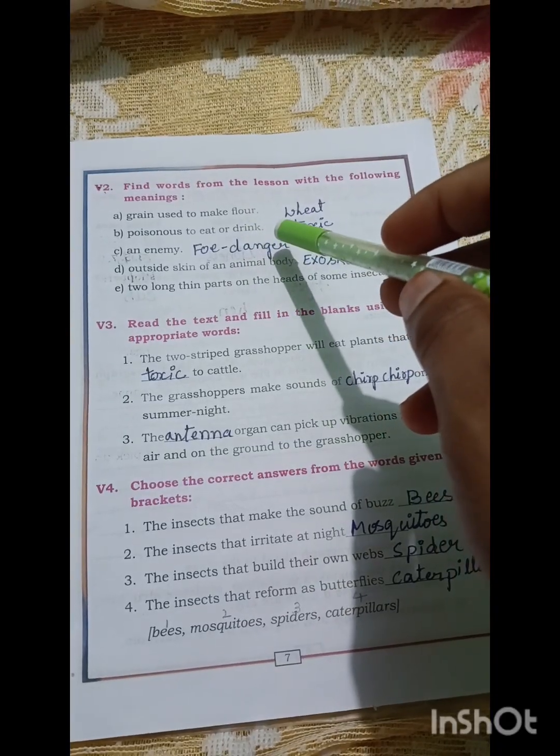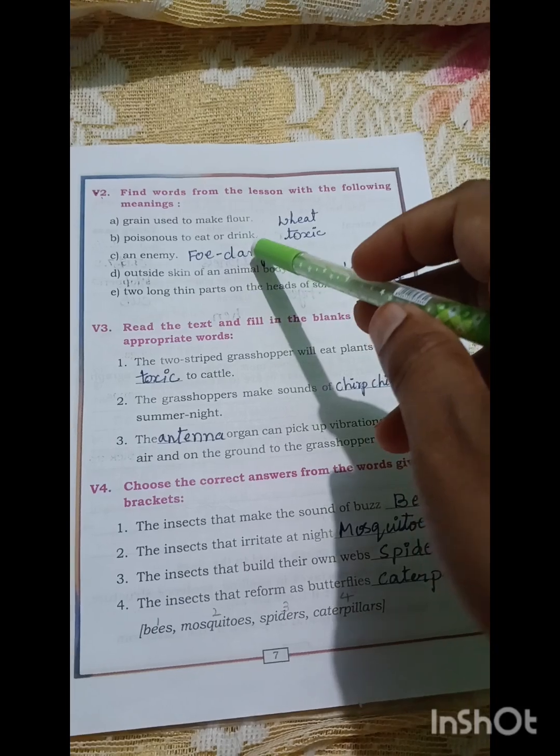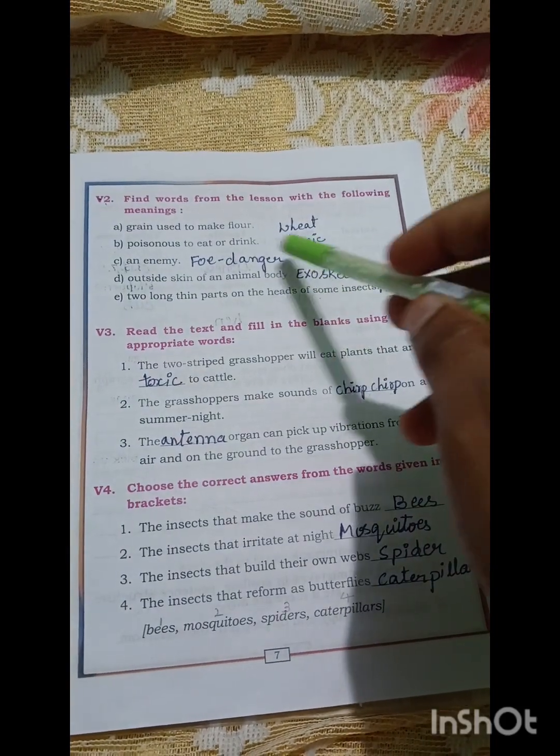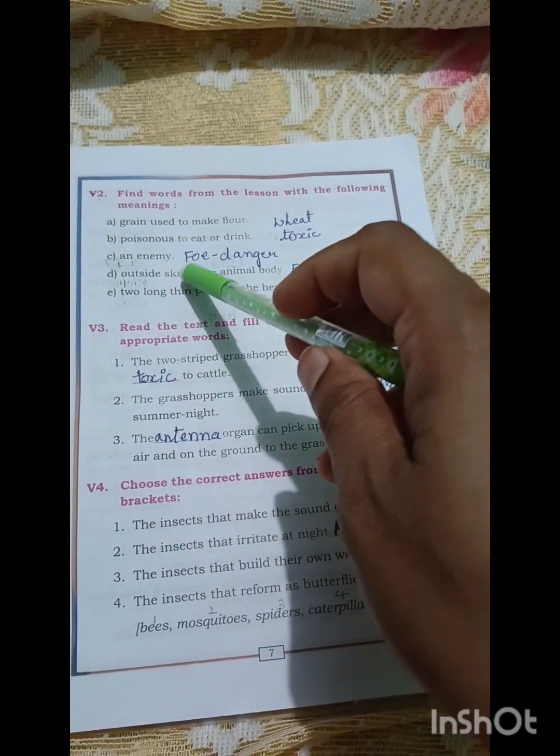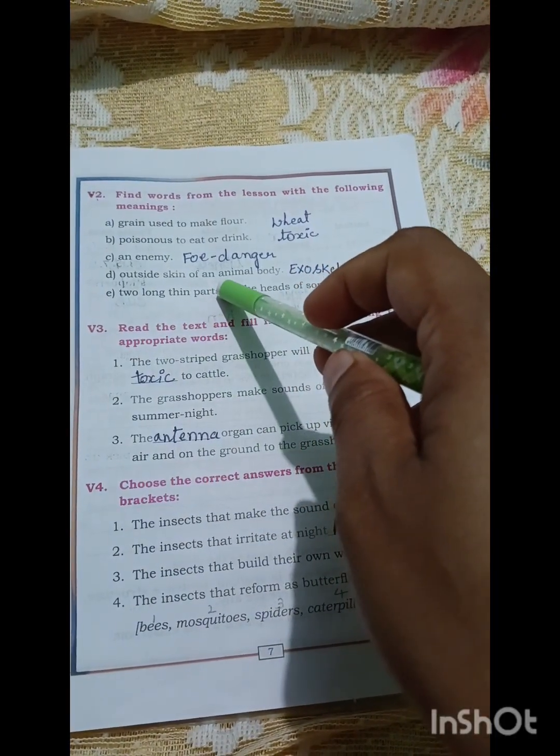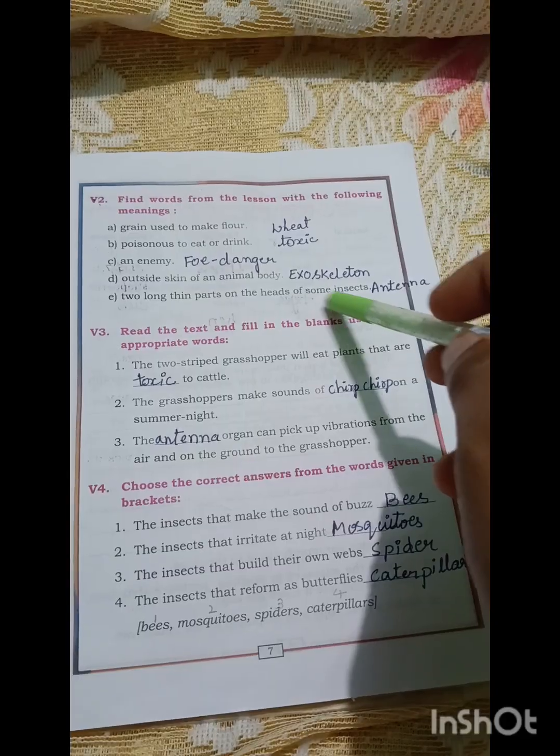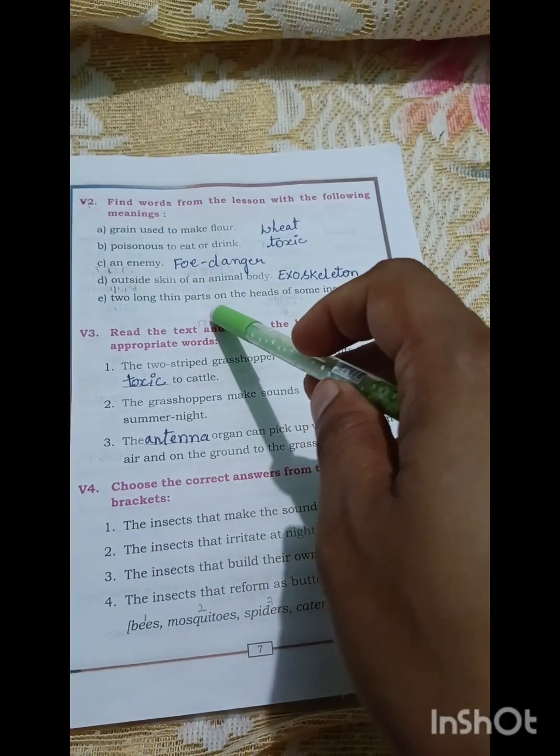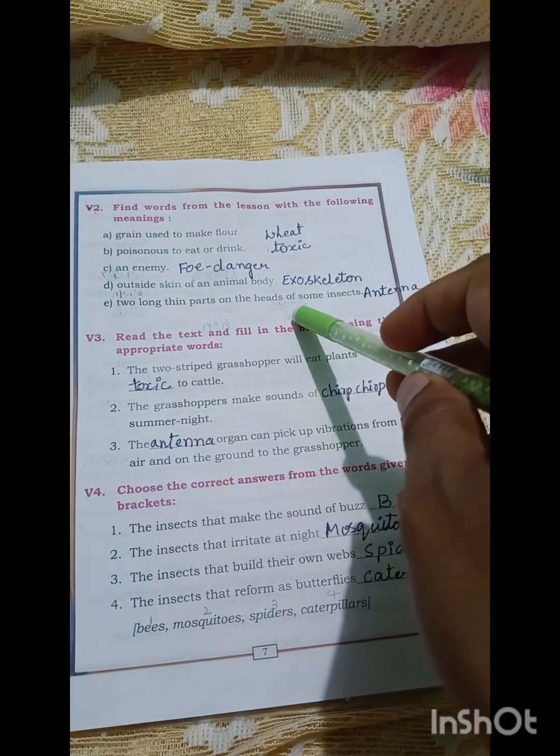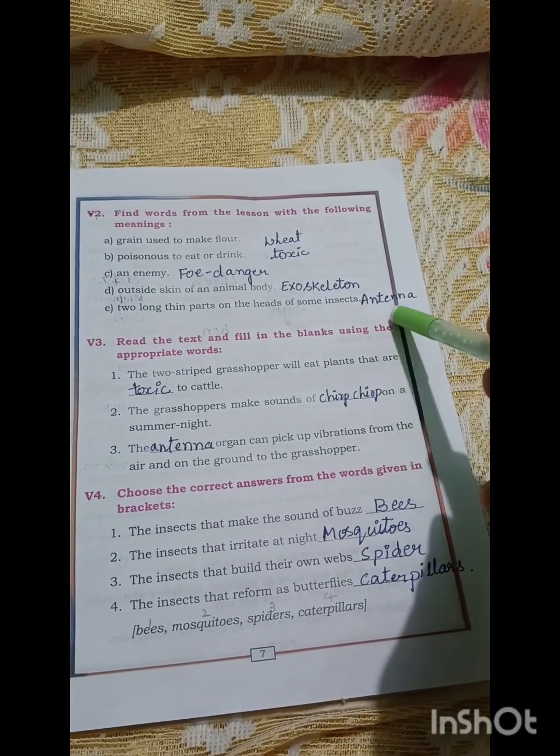Grains used to make flour: wheat. Poisonous to eat or drink: toxic. An enemy: foe, danger. Outside skin of an animal body: exoskeleton. Two long thin parts on the heads of some insects: antenna.